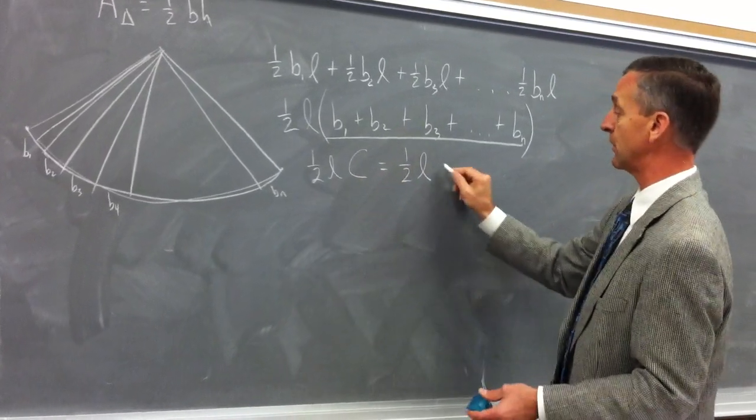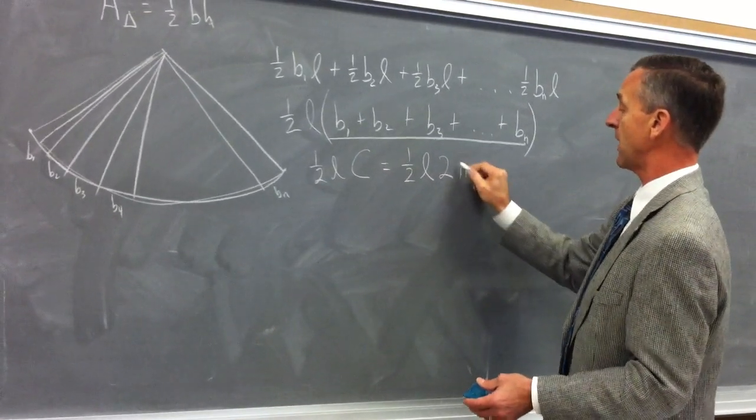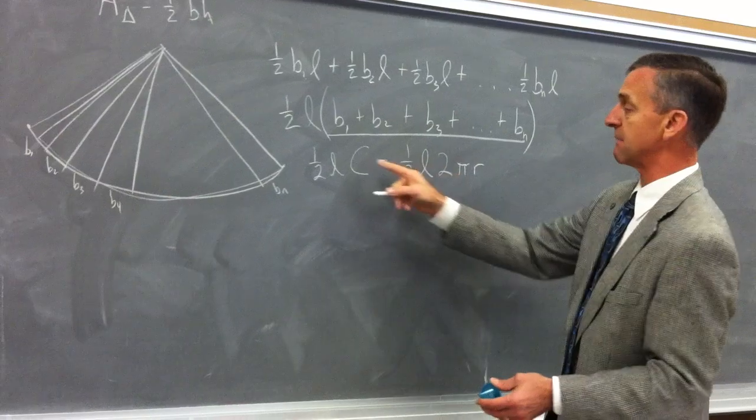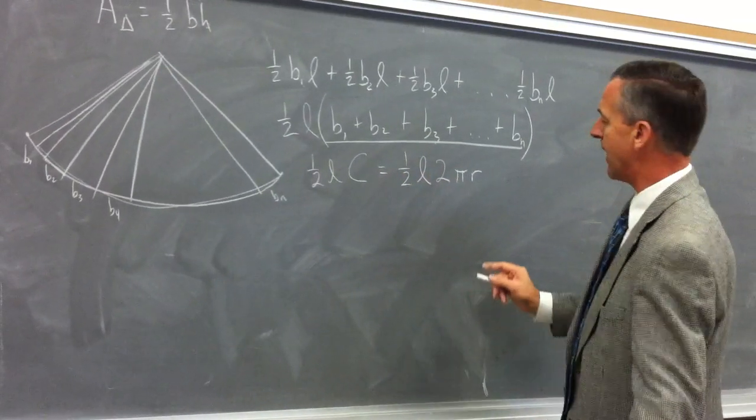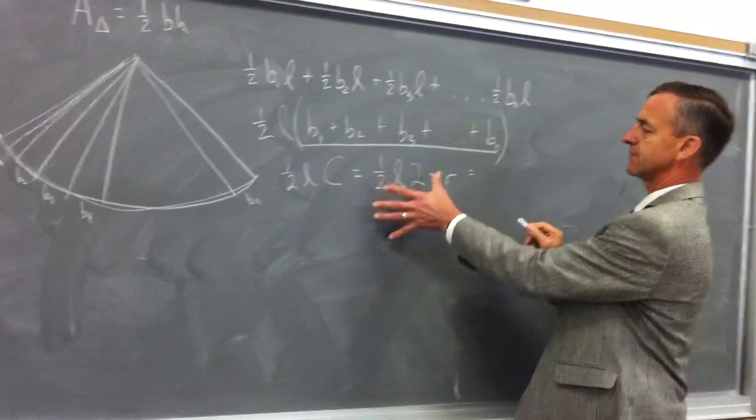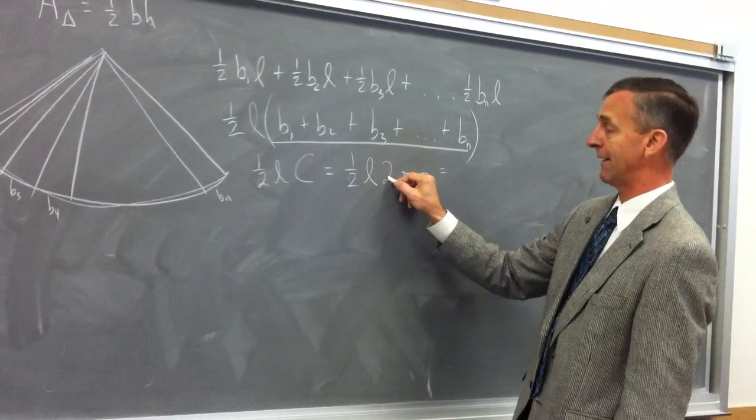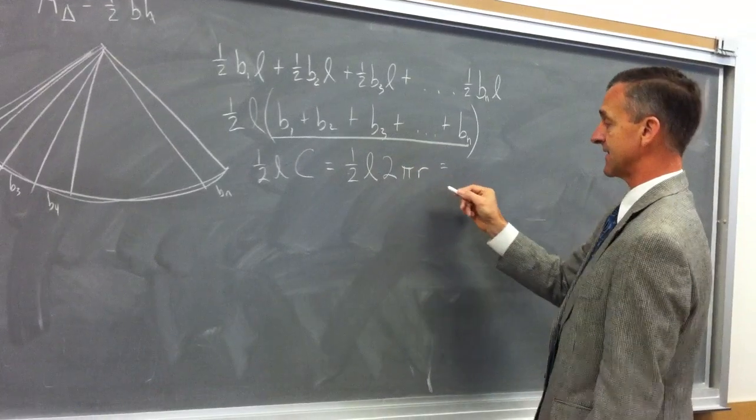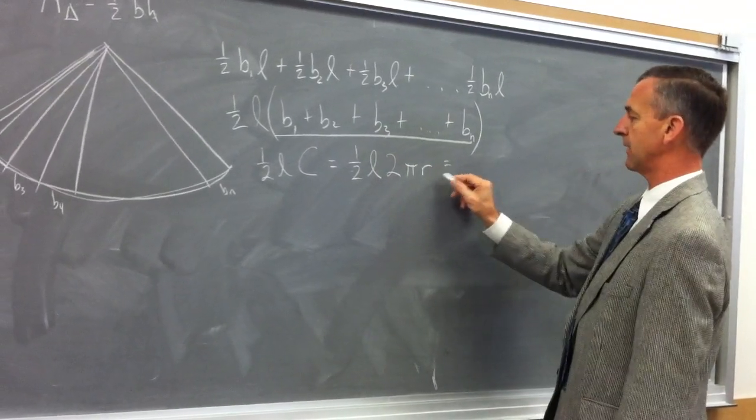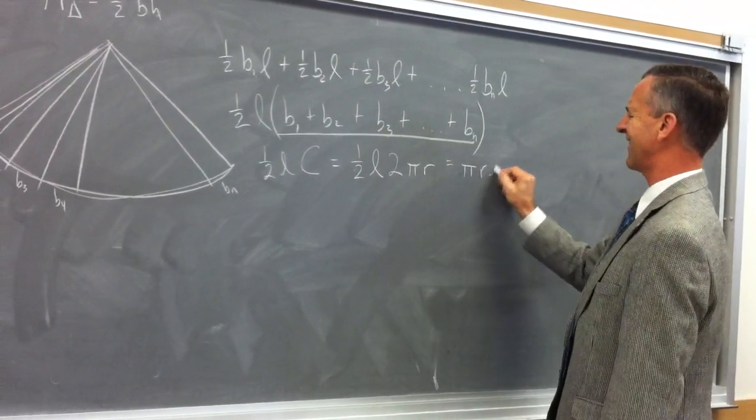Now I'm going to do a little bit of simplifying. One half times two is one, one times anything is itself, and I end up with pi r l.